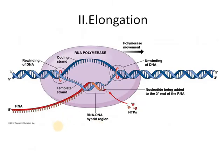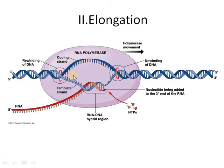Pehla RNA ka nucleotide 5' end ki taraf se lagta hai, aur RNA polymerase 3' end par nucleotides lagaata chala jaata hai. Jab DNA unwind hua, toh do strands separate hue. Ek vo strand jiske mutaabiq naya RNA ban raha hai — isko kehte hain template strand. Template strand ka jo sequence hai vo complementary hai RNA ke bhi aur dusre wale DNA strand ke bhi. RNA ka sequence ek strand ke jaisa hai, isliye isko kehte hain coding strand. Aur jis strand se transcription ho rahi hai uske do naam hain: template strand aur antisense strand.